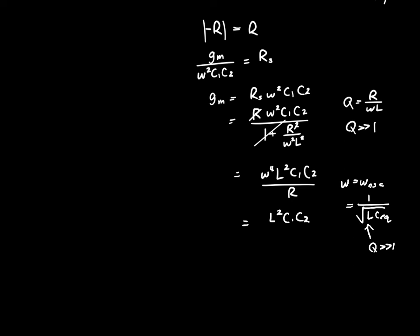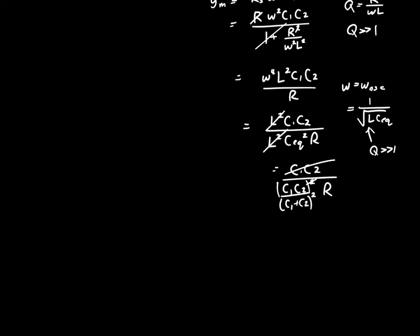But CEQ is just the series combination of the capacitors. So, let's just expand that as C1 C2 over C1 plus C2. And each one of those is squared, squared, squared, times R. So, one of the C1 C2 cancels, and you can see this is just algebra. So, C1 plus C2 flips up top, and we get C1 plus C2 squared divided by C1 C2 times 1 over R. And that's our original resistance, R or RP, whichever you prefer. And that's what our GM must be equal to in order for the circuit to oscillate. Now, in reality, we want our GM to be larger than that because the resistance will go down as our amplitude goes up. And we've got some tolerances involved, so we want GM to be at least equal to that.